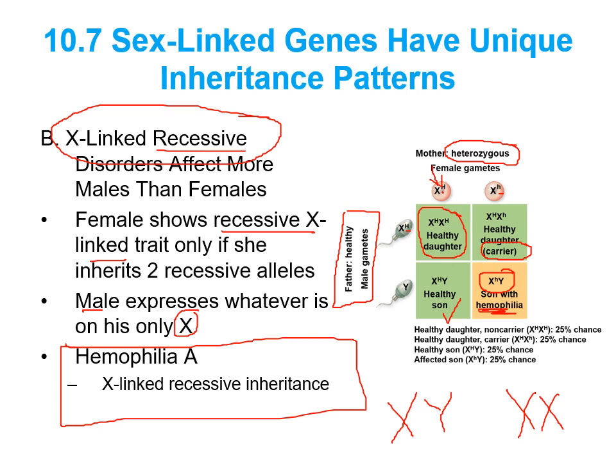Does that mean you can never have a female who has hemophilia or who is colorblind? No, it doesn't mean that at all. But in order for the female to have hemophilia A, that would mean she would have to inherit a mutated copy from both mom and dad — which would mean that dad would have to know he has the disease, because he only carries one X chromosome.